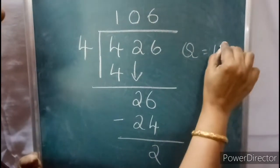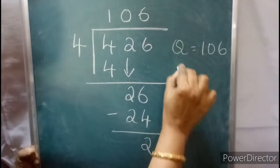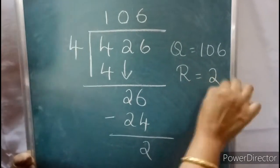What is the quotient? Quotient equals 106, and the remainder equals 2.